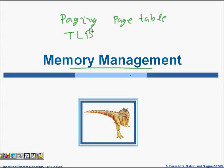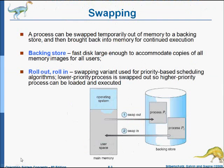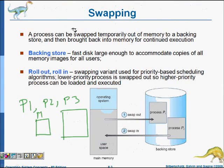In this lecture we are going to learn about page table and translation lookaside buffer. First, let's look at one example of swapping. We have three programs running: P1, P2, and P3. Let's say our main memory is just big enough to run one of them — what will happen?